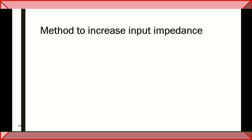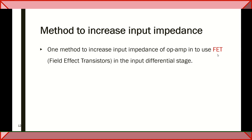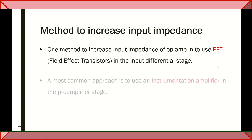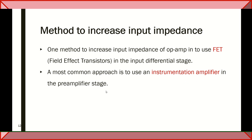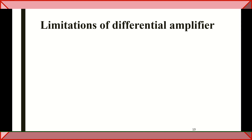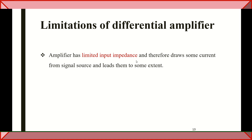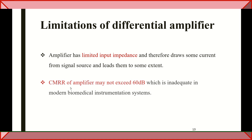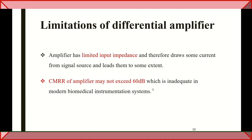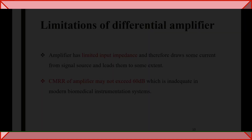There are two methods to increase the input impedance. First, we can use a field effect transistor in the differential stage to increase input impedance. Second, we can use an instrumentation amplifier in the pre-amplifier stage to increase input impedance and common mode rejection ratio. The limitations of a differential amplifier are: limited input impedance and CMRR sometimes not exceeding 60 decibels. So normally we move to the instrumentation amplifier.